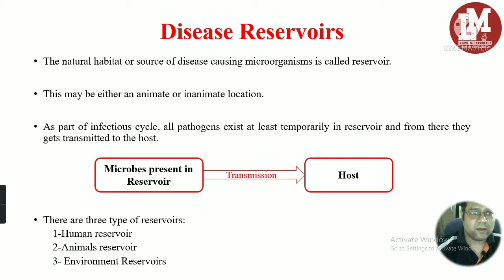The disease reservoirs are the natural habitat or source of the disease-causing microorganisms, where microorganisms live under normal conditions. These reservoirs may be either animate or inanimate — that is, non-living. As part of the infectious cycle, all microorganisms exist at least temporarily in reservoirs, and from there they get transmitted to the host where they might be responsible for causing infections.